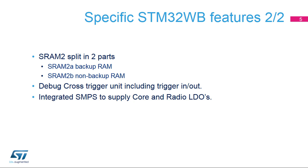The SRAM-2 is split in two parts: SRAM-2S is a backup part, while SRAM-2B is a non-backup part. A debug cross-trigger unit allows the use of a trigger input-output on an I/O port. An integrated switching mode power supply, or SMPS, provides an intermediate voltage for the core and radio LDOs.